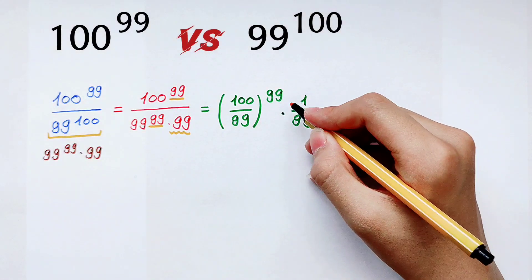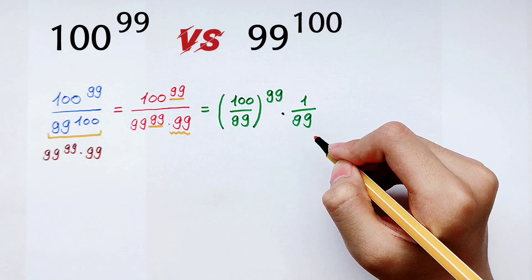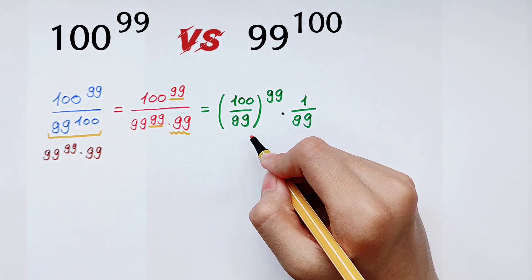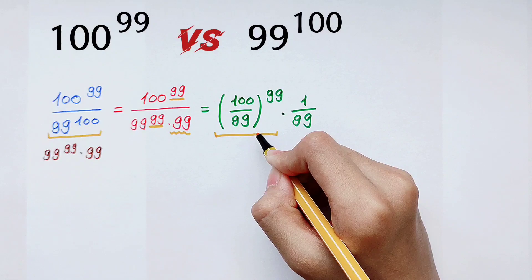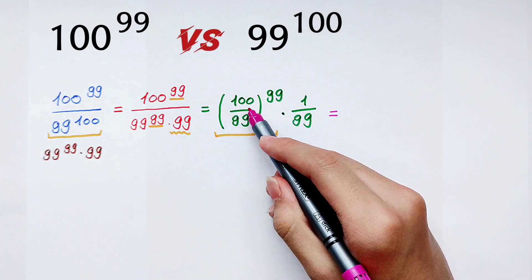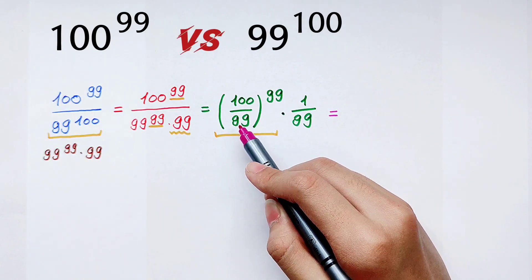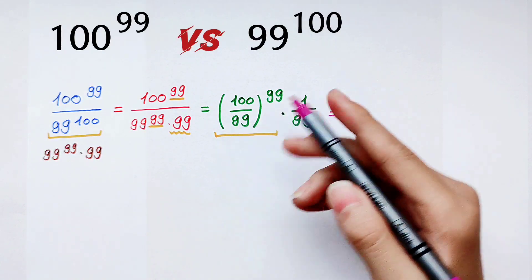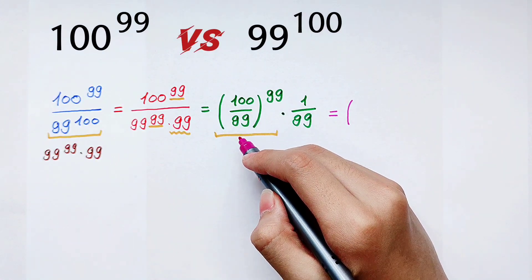Now, because 1/99 is just a simple fraction with numerator 1, just pay attention to (100/99)^99. Here the numerator is 100 and the denominator is 99. The numerator is larger than the denominator, so we write it as 100 = 99 + 1.